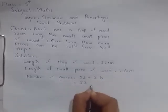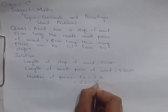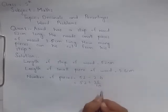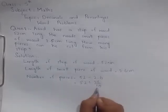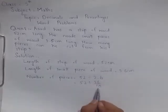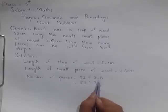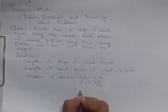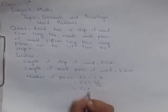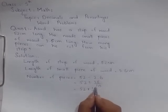52 divided by 2.6... Denominator mein point ki jagah one laga diya, point ke baad jitne digits aa rahe... Agar mein divide ke sign ki jagah hide kar ke sign multiply ka sign laga dun. 520 divided by 26.